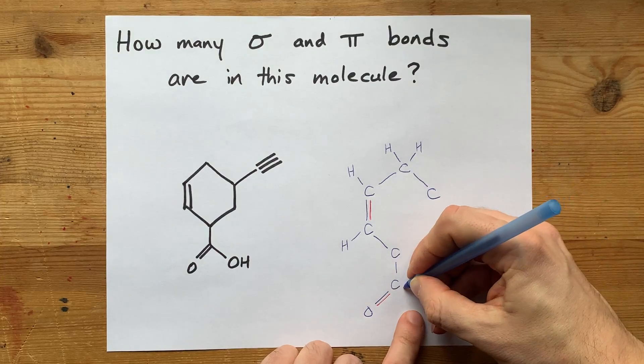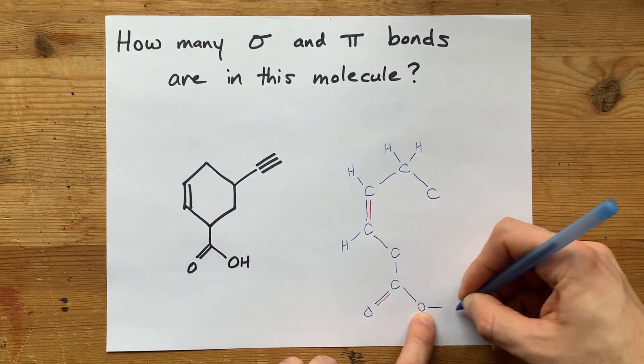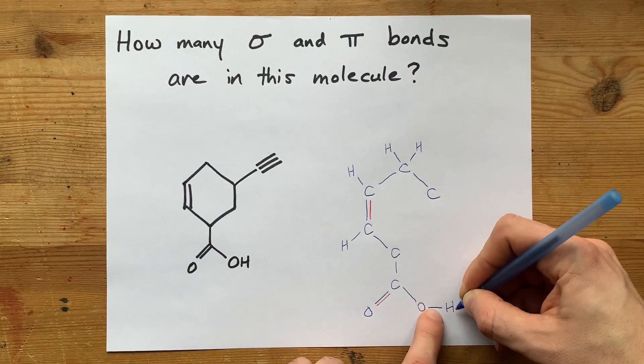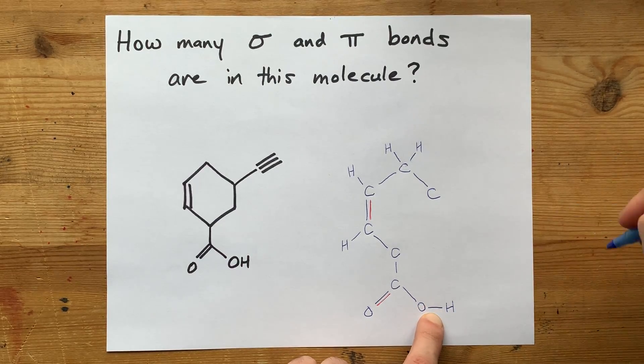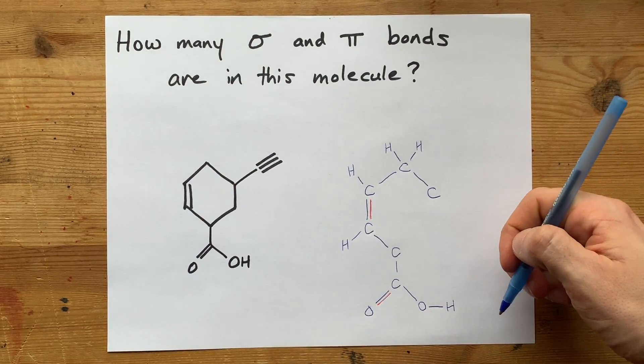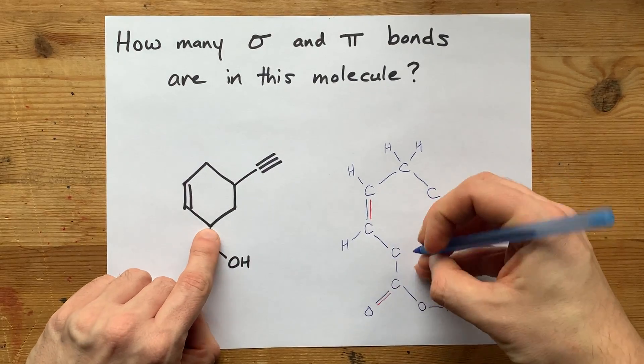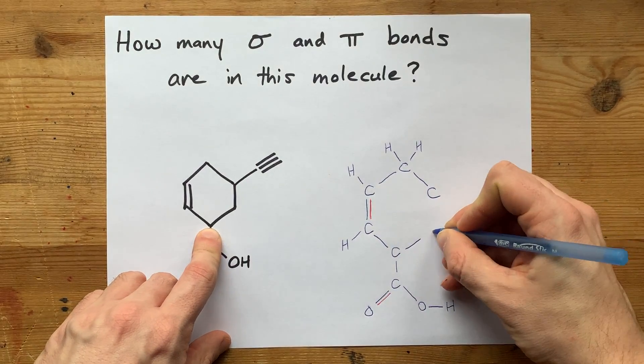Now that was bonded to an oxygen, and that oxygen was bonded to hydrogen. I'm going to explicitly show that bond with a single line here to show that it is an extra sigma bond in the molecule. Now I'm done with this substituent here, so I'm going to come back up. Carbon.